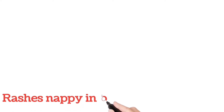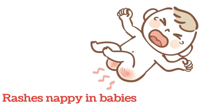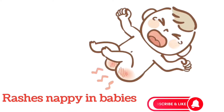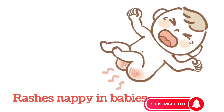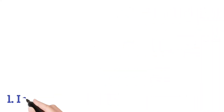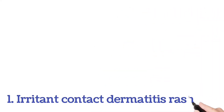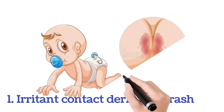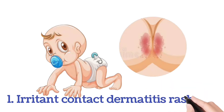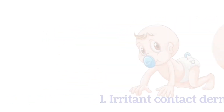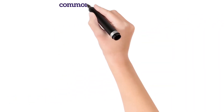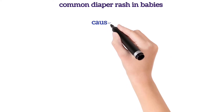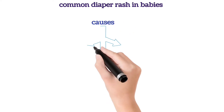Nappy rashes in babies and kids. Irritant contact dermatitis rash is one of the most common diaper rashes. Causes include the following.